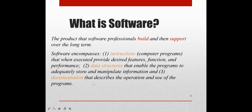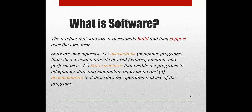The third component is documentation, which describes the operation and use of programs. Once you write and save a program — for example, 'add.c' — that file is documentation, describing the operations and use of the program, saved using the software. So this is the meaning of software, and professional software will help build and support programs for a long period of time.